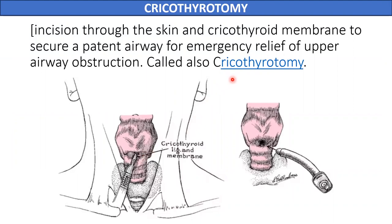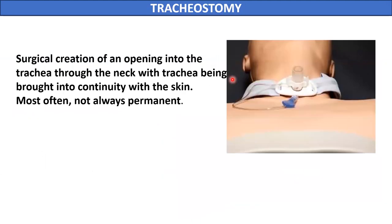Another way to maintain the patency of the air passages is tracheostomy. Here, an incision is made in the trachea and a small tube is inserted through it. Tracheostomy is usually a more permanent procedure, mostly done in patients with neurological lesions, vocal cord paralysis, or tumors of the vocal cords when air entry to the lower respiratory passages is blocked.